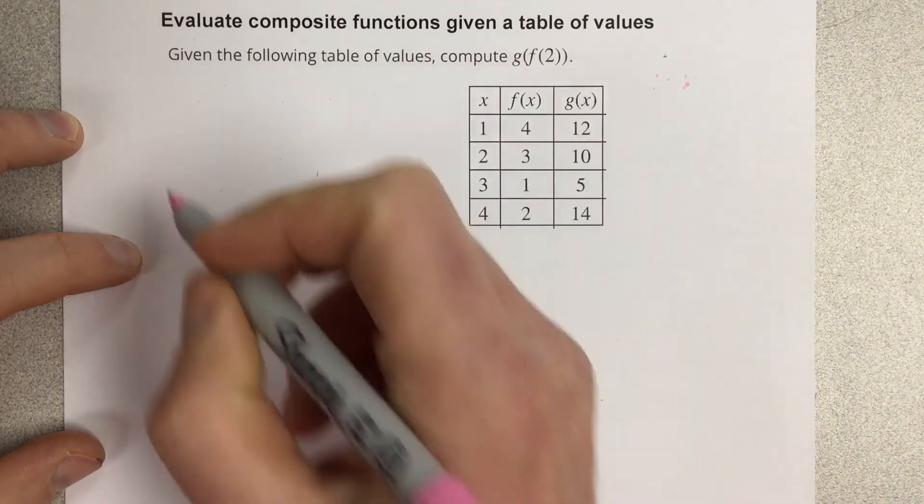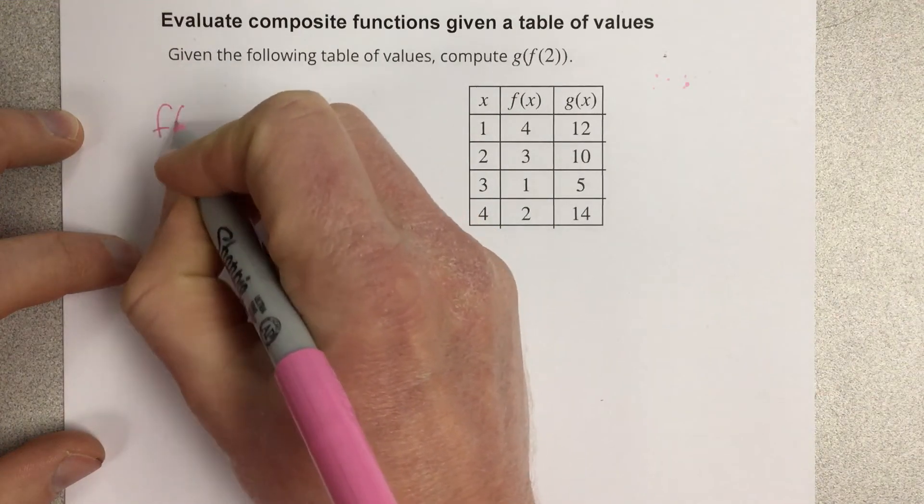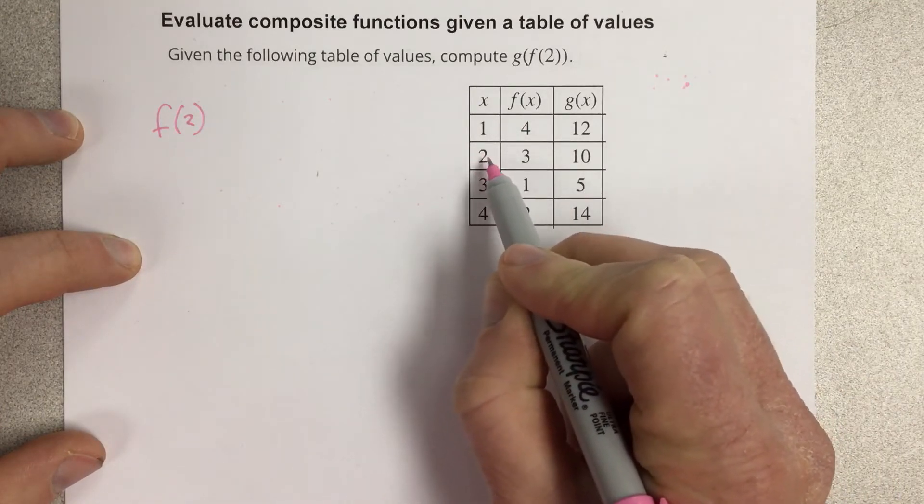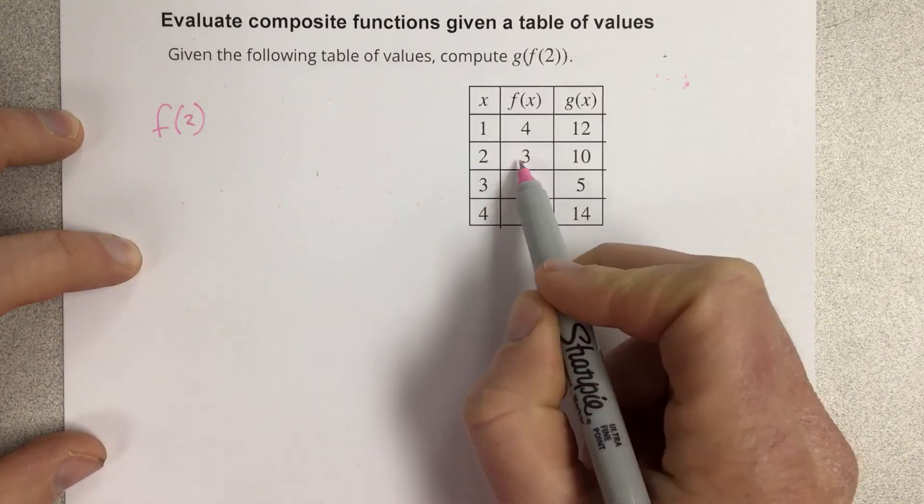So the first thing we want to figure out is what is f of 2? Well, if I go to x equal 2, right here, and I move over to the f function, I can see that f of 2 is 3.